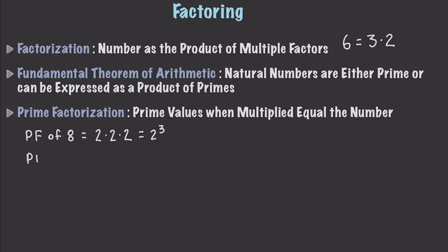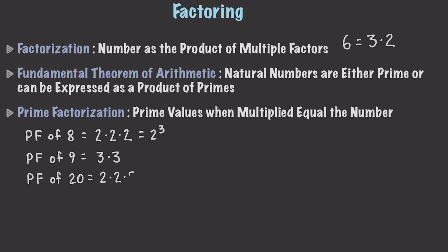What is the prime factorization of 9? This is going to be rather easy — it's just 3 times 3 because 3 is prime. Now let's find the prime factorization of 20. We're looking for prime values only. 2 times 10 would not work because 10 is not prime. However, if we take 2 times 2 times 5, all of those are prime, and we've found our prime factorization.